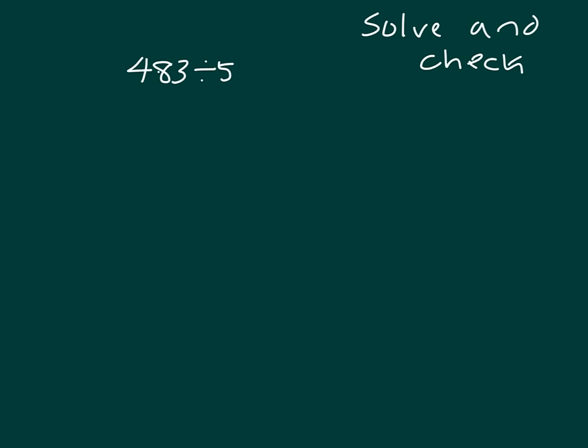Here we have this problem where we're asked to solve and check. We have 483 divided by 5. We'll use the standard algorithm here. Here is 483. That's what we're dividing, and we're dividing by 5.